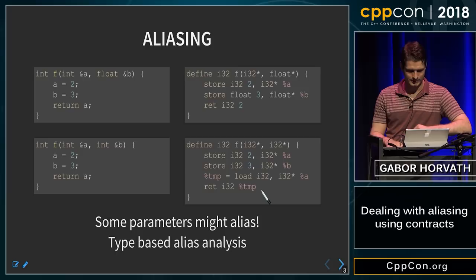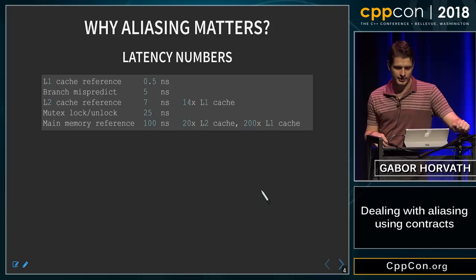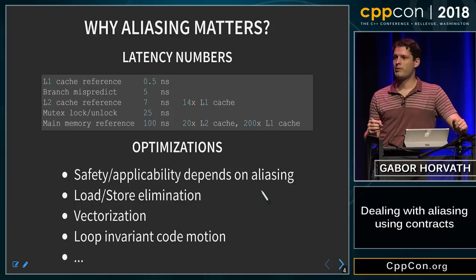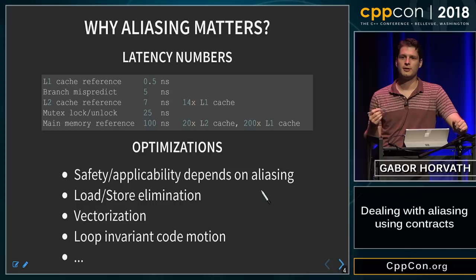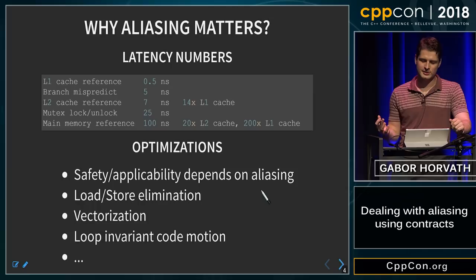So why do we care? One reason is that memory operations are usually slow, much slower than other operations. Even if the value we are going to read is in a cache, sometimes it's slow. But more importantly, the reason is what the compiler can do. When the compiler applies some optimizations to our code, it has to prove that the optimization will not break the semantics of the code. A lot of optimizations are only safe if the compiler can prove that two pointers may not alias. One of the optimizations that requires alias analysis is vectorization.